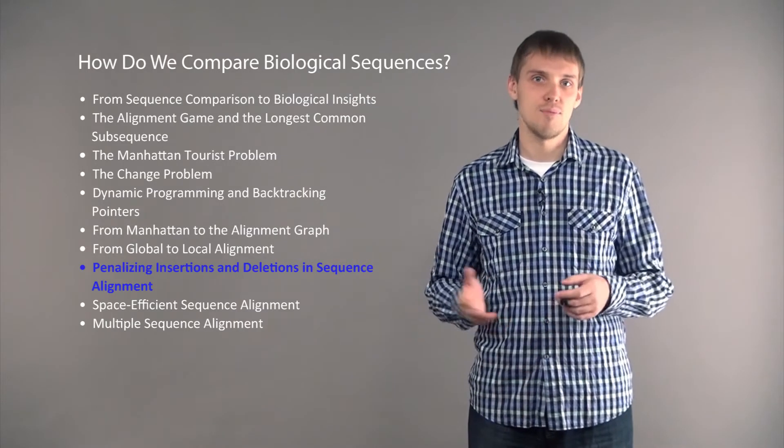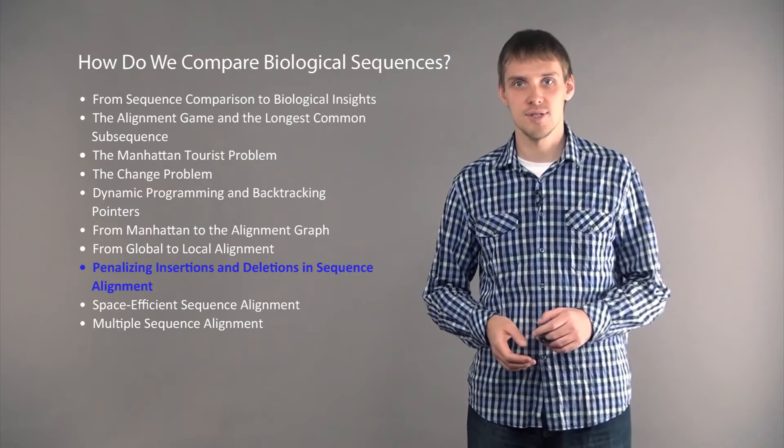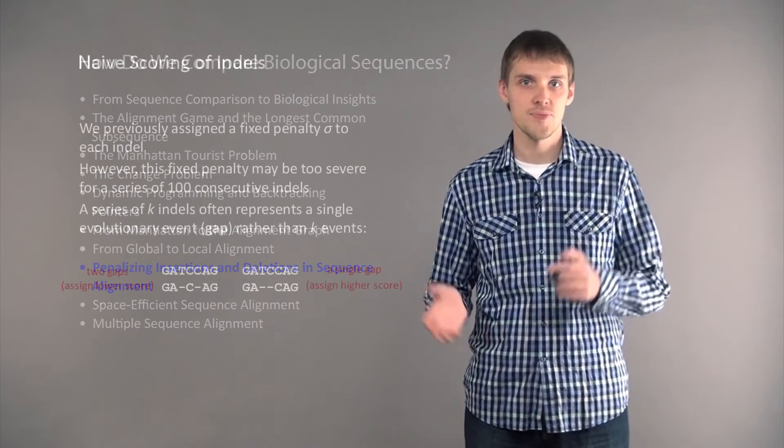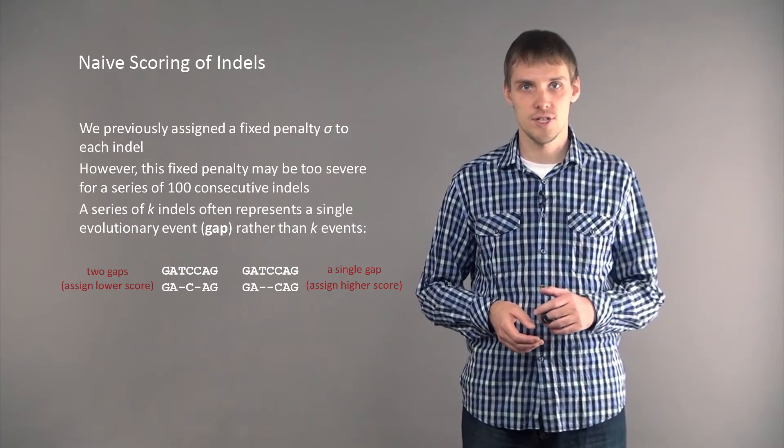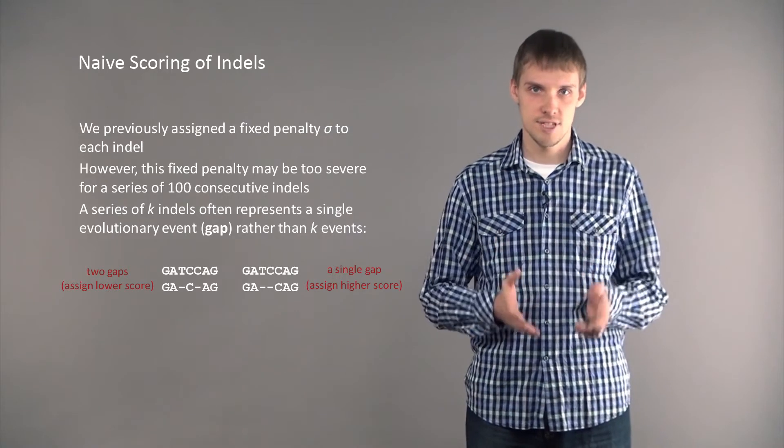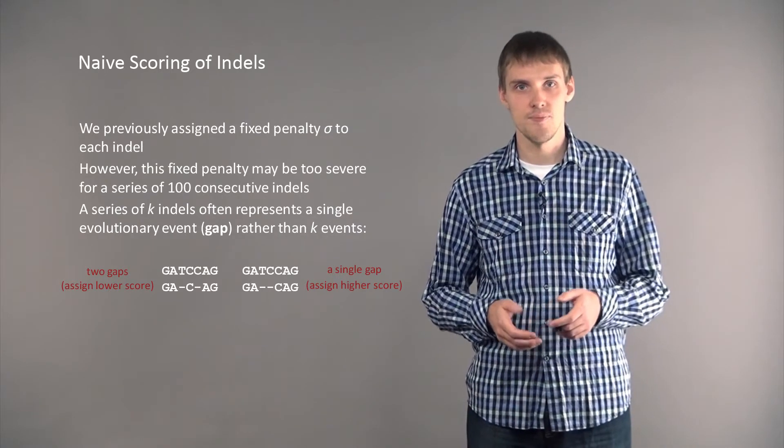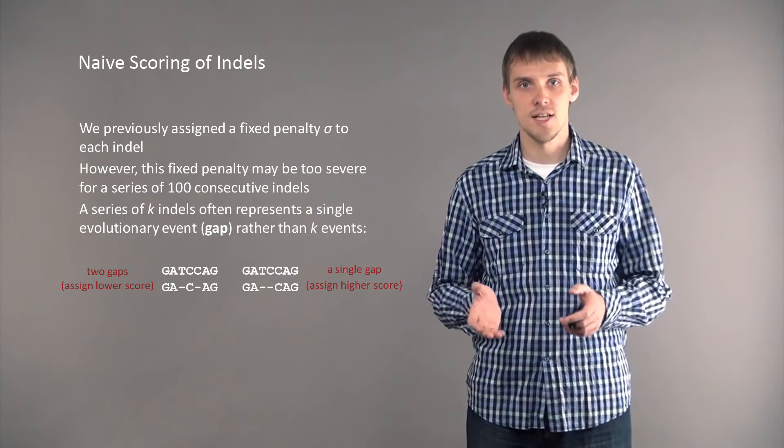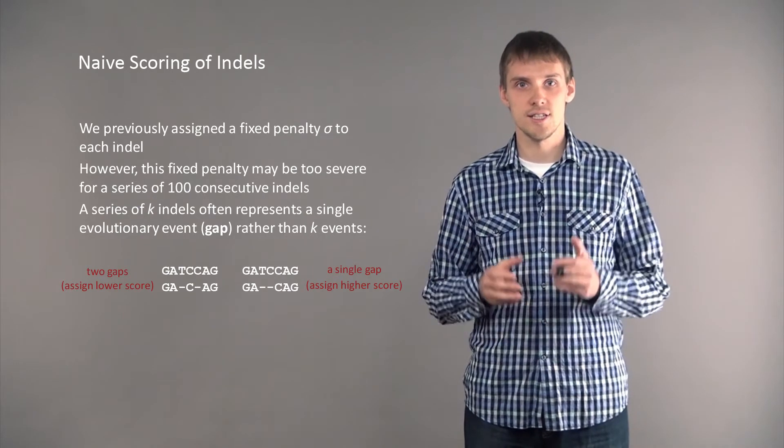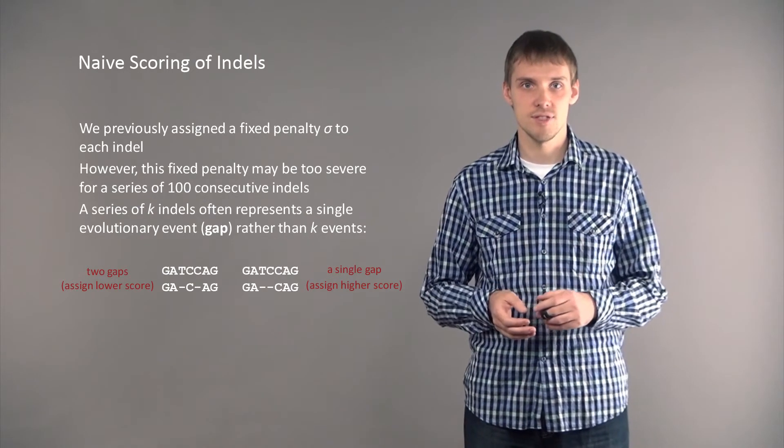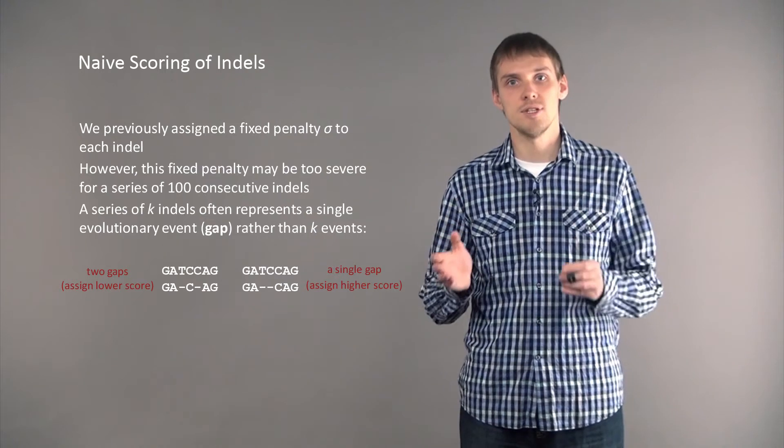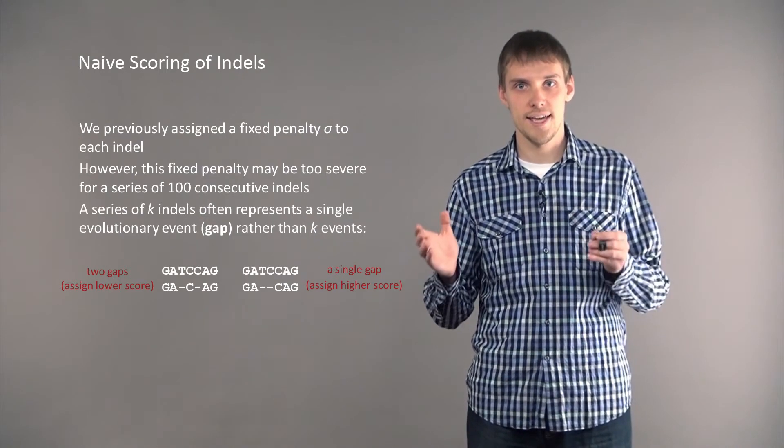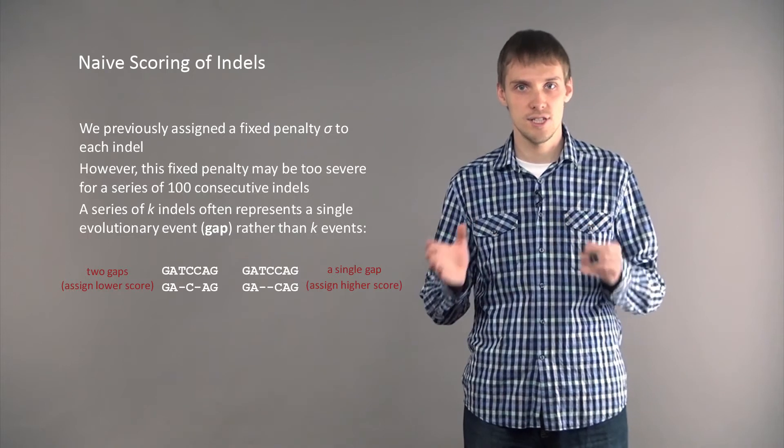So now we will discuss how to penalize insertions and deletions in sequence alignment in a more sophisticated way. Previously, we used naive scoring for indels where we assigned a fixed penalty sigma to each indel. However, this fixed penalty isn't good to represent a series of hundreds of consecutive indels.